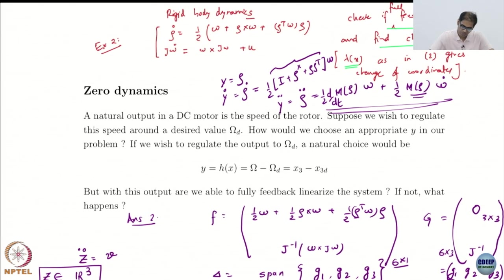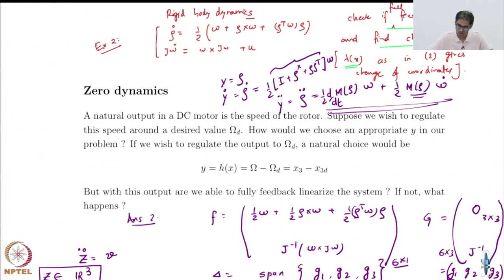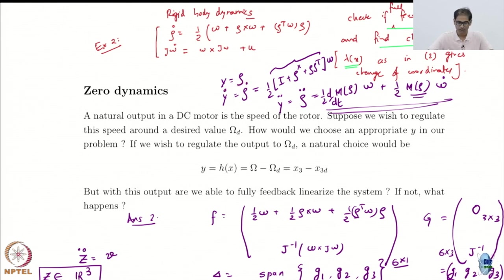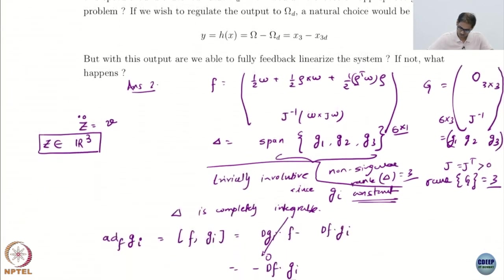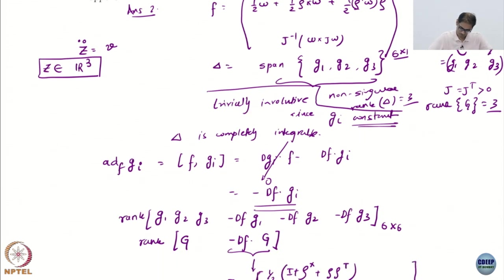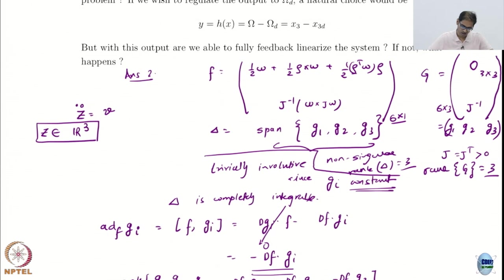There is a small rigid body example that I have also done here — I am not going to cover this, I want you to take a look on your own. I have asked for the output with respect to which you get full state feedback linearization. It turns out you can take y equal to ρ itself, which is the kinematics parameters — modified Rodriguez parameters or Quaternion. This is the rigid body equations you have in the current homework. With this output you can get the feedback linearized system under certain conditions.